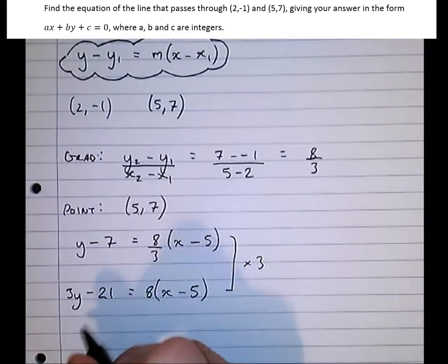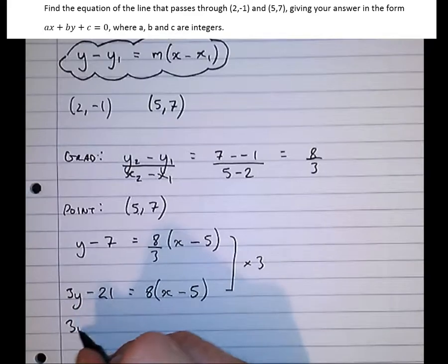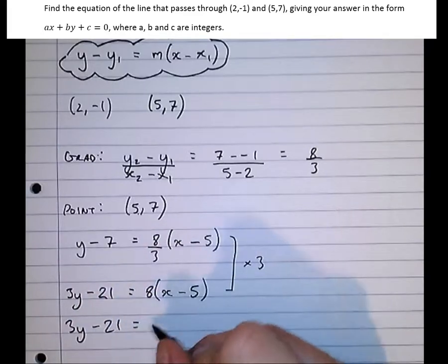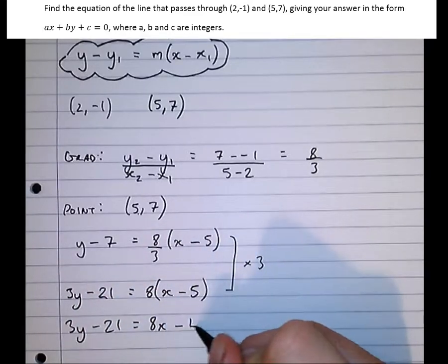Now it's much easier to multiply out. We've got no fractions getting in the way. So 3y minus 21 equals 8x minus 40.